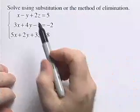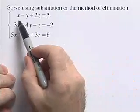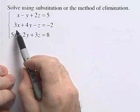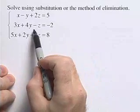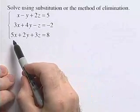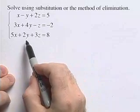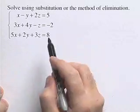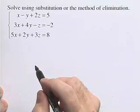For this problem we're going to solve a system of linear equations in three variables using substitution or elimination. We have the system: x minus y plus 2z equals 5; 3x plus 4y minus z equals negative 2; 5x plus 2y plus 3z equals 8. We're going to solve this using the method of elimination.